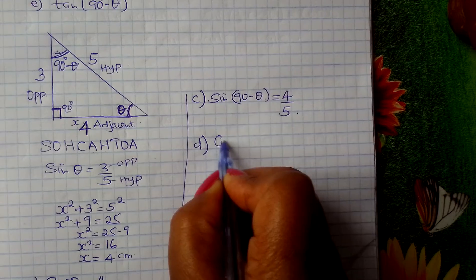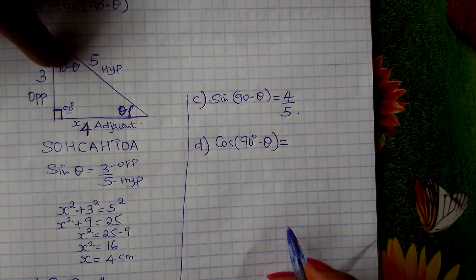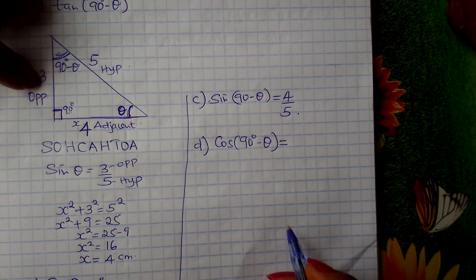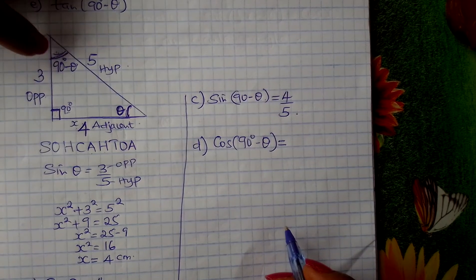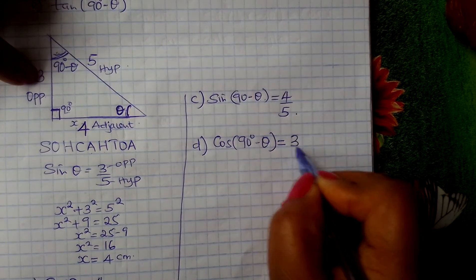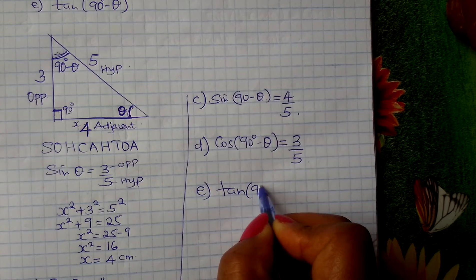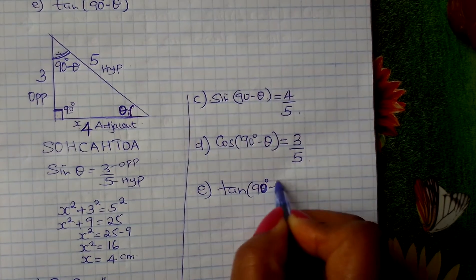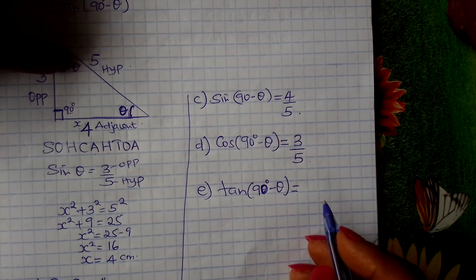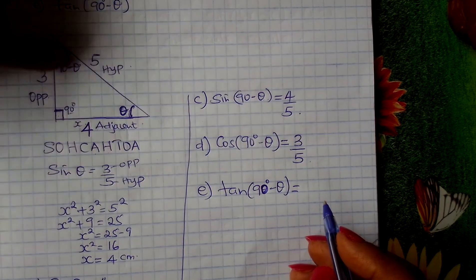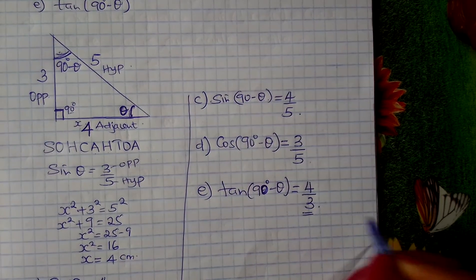We go to D. What is cos 90 degrees minus theta? The cos of this angle here equals adjacent over hypotenuse. This is the adjacent of this angle, so cos 90 minus theta equals adjacent, which is 3, over hypotenuse, which is 5. And similarly, tan 90 degrees minus theta will equal opposite over adjacent, so tan 90 minus theta equals opposite, which is 4, over adjacent, which is 3.